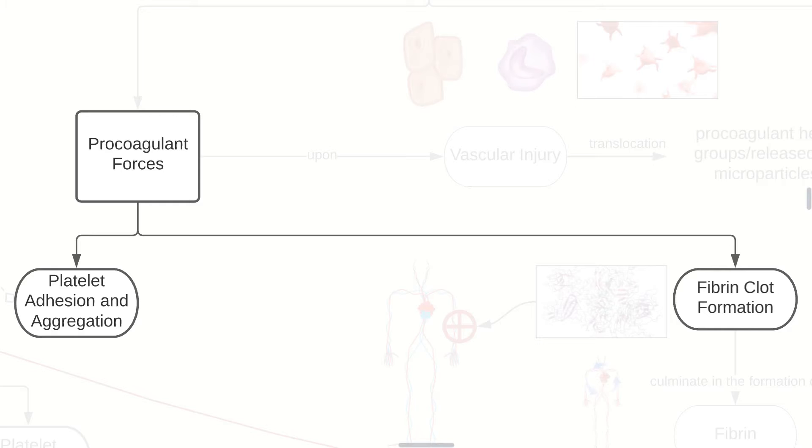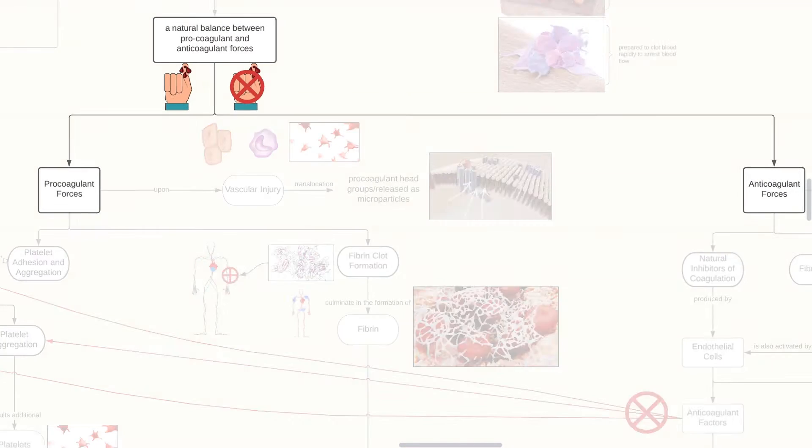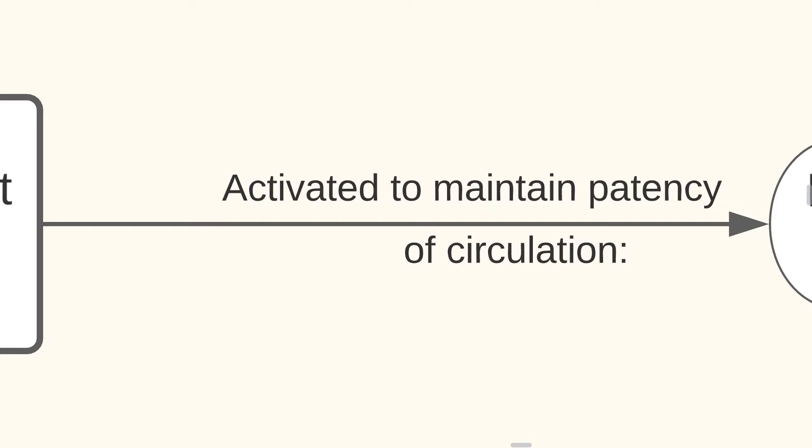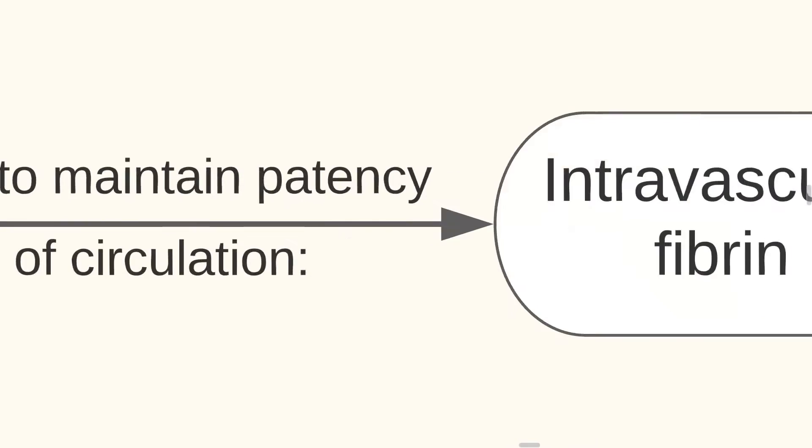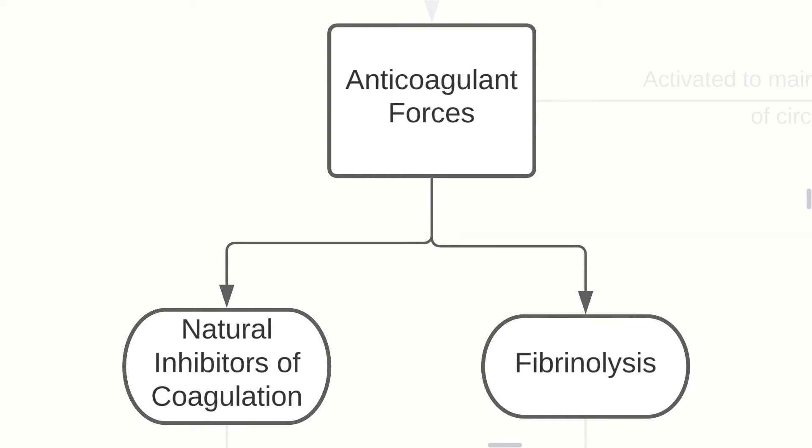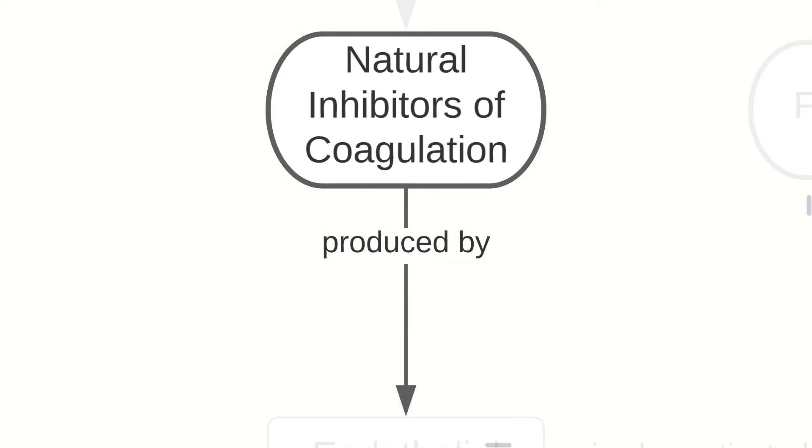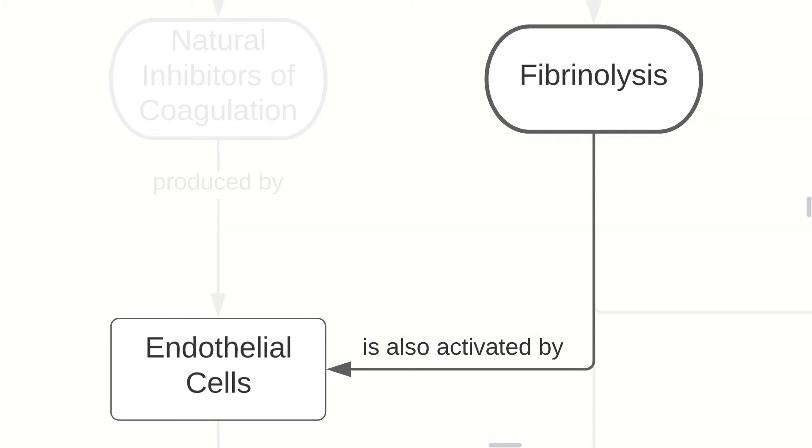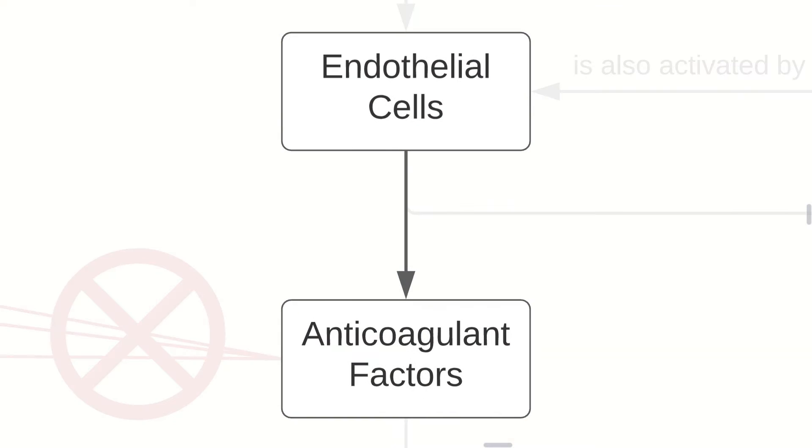Now that we have discussed our procoagulant forces, let us now turn to our anticoagulant forces. As to every yin and yang, we have our anticoagulant forces, which are activated to maintain patency of circulation by preventing intravascular fibrin. We have two major anticoagulant forces, the natural inhibitors of coagulation produced by endothelial cells. This is also activated by fibrinolysis.